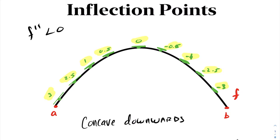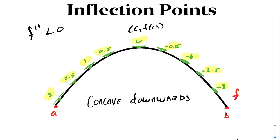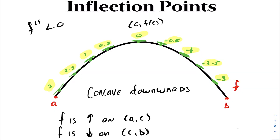Notice another characteristic of concave downward functions is that its tangent equations always lie above the function. Notice here, not to be confused with the concept of the first derivative: labeling this point c, f at c, our function f is increasing from a to c, and decreasing from c to b. That means our first derivative is positive on the first interval and negative on the second.